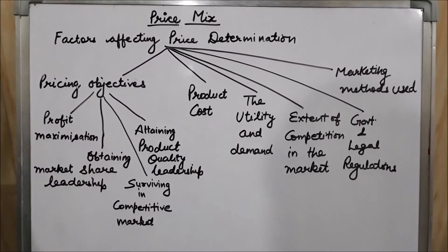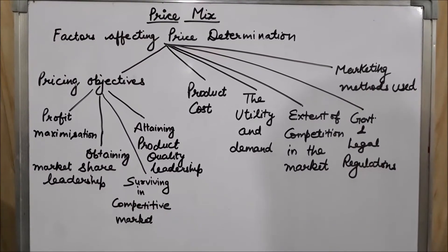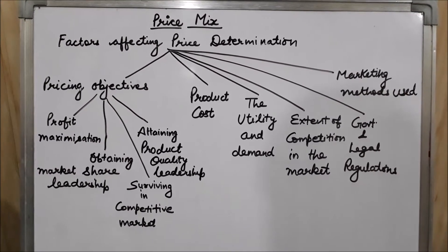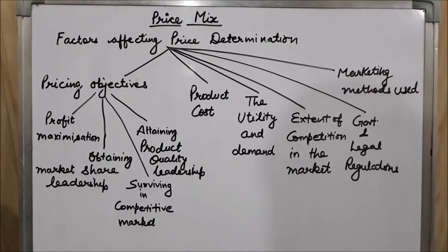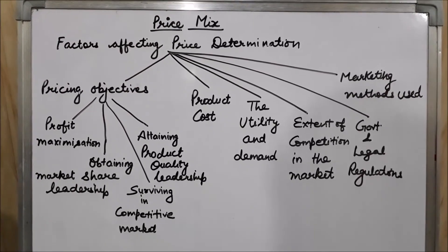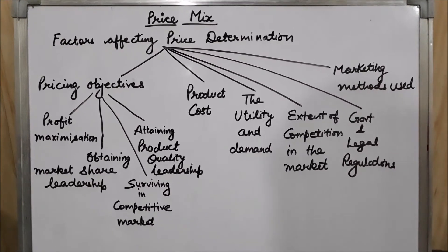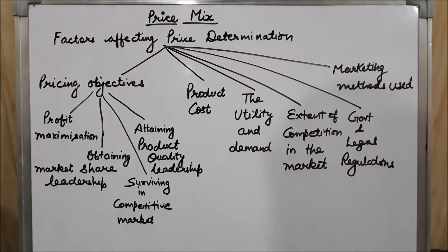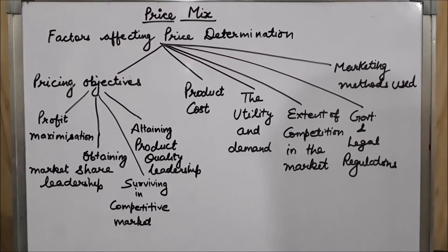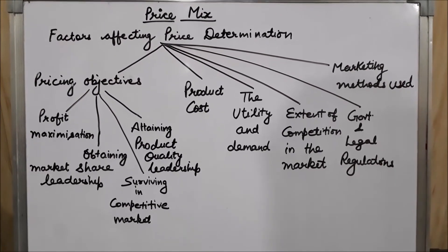Now shifting to the second factor — product cost. Product cost is also a very crucial factor that must be considered while fixing the price. Product cost means the cost of processing, producing, distributing, and selling goods and services. Whatever amount is incurred in production, distribution, and selling must all be included in the price of the product, otherwise the firm will not be able to survive in the long run.